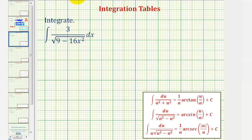Looking at the integration formulas provided below, notice how the integral fits this form here, where the integrand has the square root of a squared minus u squared in the denominator. So in our case, a squared equals nine, and u squared equals 16 x squared.